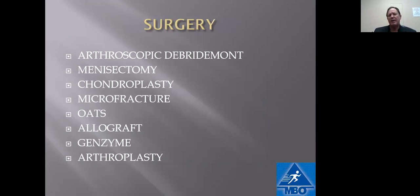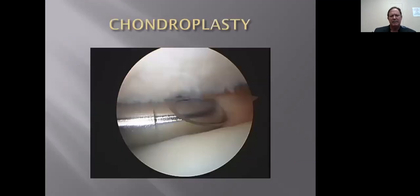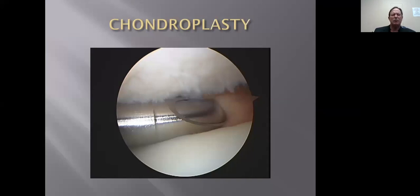For surgical intervention, there are a number of procedures, each with a role in treating knee arthritis. Arthroscopic chondroplasty — where you go in and smooth out the irregular cartilage — was done a lot more in the past. It turns out it doesn't work that well according to large studies. There's probably some indication for it, but just smoothing out the cartilage doesn't provide much long-term relief — maybe six to twelve months — so it's not a very effective long-term treatment.